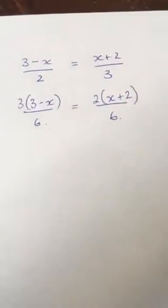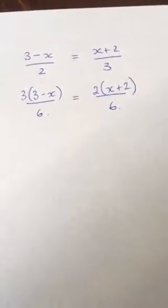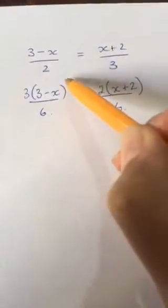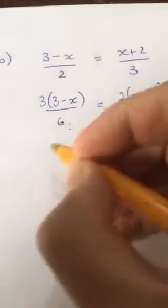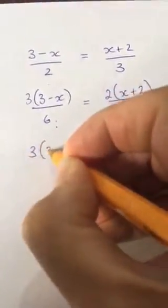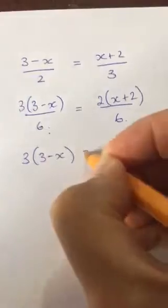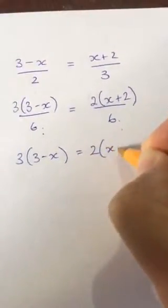Now I've got maths magic. All of this over 6 equals all of this over 6, which means this must equal this. So I can just rewrite the numerators without any denominator. It's pretty cool, really.